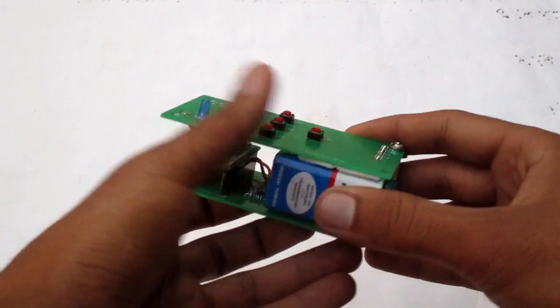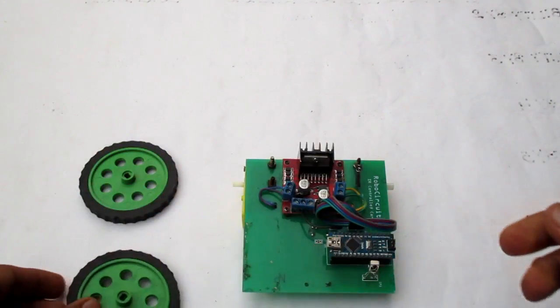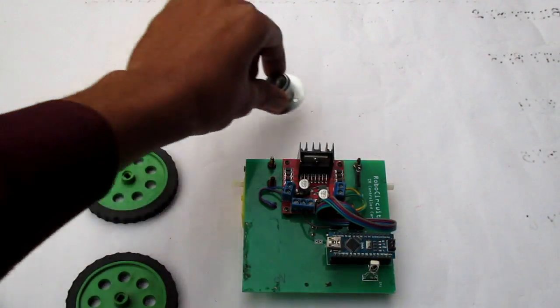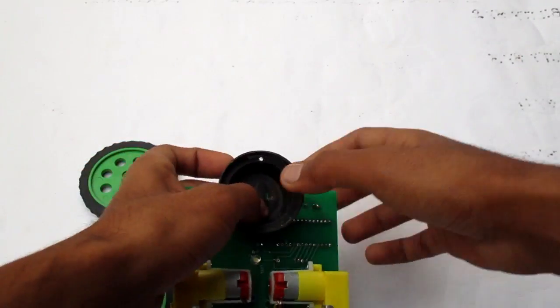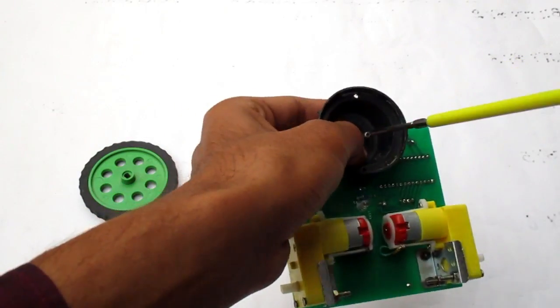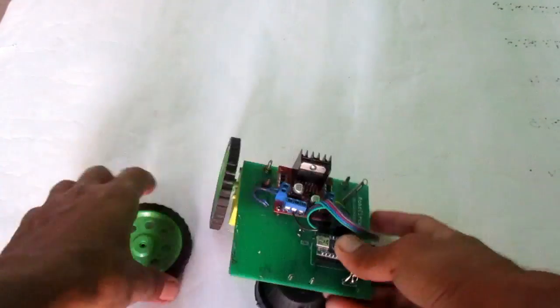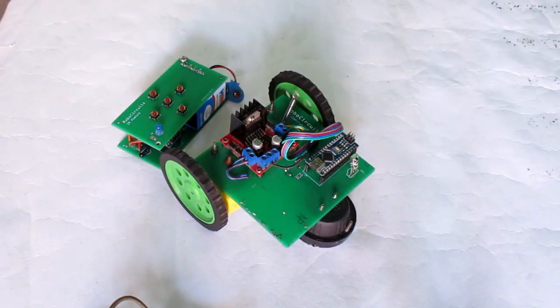Okay, now take the IR car and its wheels. Install the front wheel first. Make sure to screw it tightly. Now insert the rear wheels.